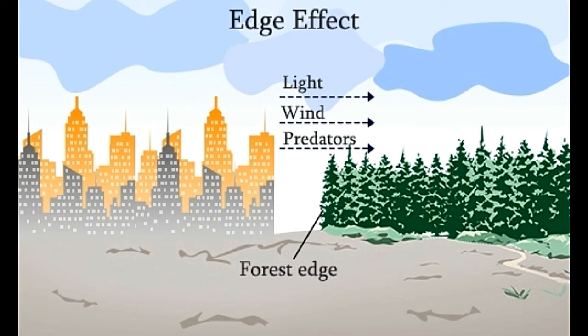Types of edge effects — Abiotic: Abiotic effects are the physical changes observed at a forest edge, such as an increase in sunlight, wind, air temperature, and moisture, which differs from the conditions seen in the interior of the forest.